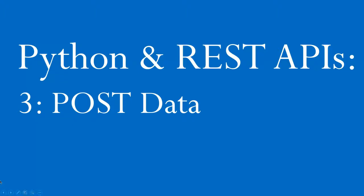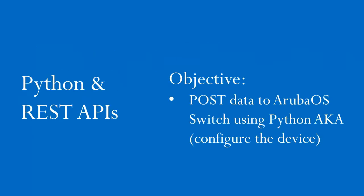Hello, Joe Neville here, back with another Python and REST API video. In video two of this series we did a GET of data from an Aruba OS switch, and the objective in this video is to POST data to the switch. We're going to configure a VLAN and the VLAN name on the switch using Python, and importantly we're not going to be using CLI commands to do this — we're actually going to be using the device's REST API.